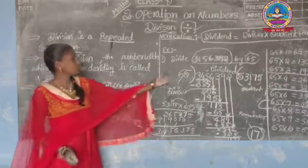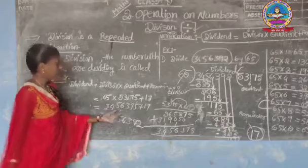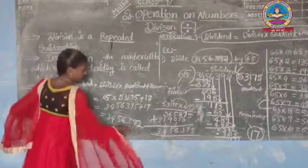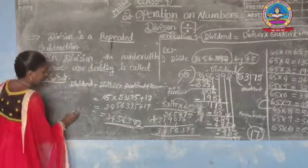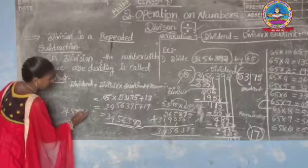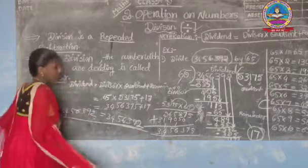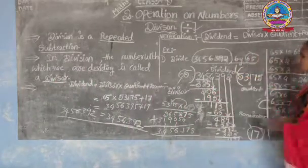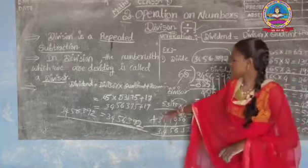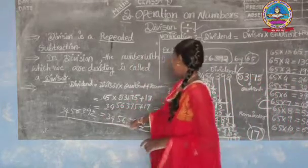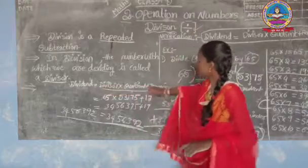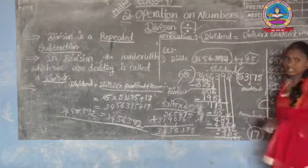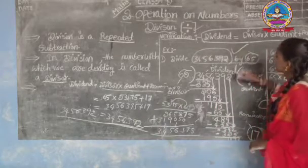Is this equal to the dividend? Yes — 3,456,392 equals the dividend 3,456,392. The two values are equal, which means the division process is correct. The division is verified as correct.